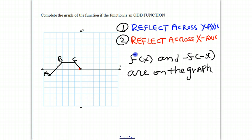So once again, for us to have an odd function, for every point on the graph, there must be a corresponding point that has been reflected across the y-axis and the x-axis. So let's do this one point at a time.